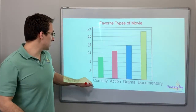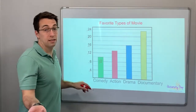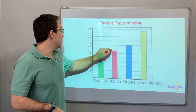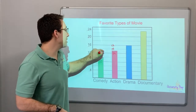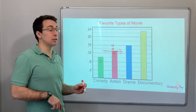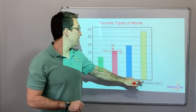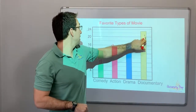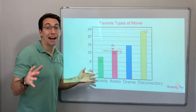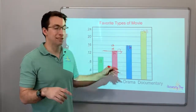Comedy looks like 4, 6, 8, 10 — ten people voted for comedy. Action: 4, 8, 12... so this is 12, 14, 16 — what's right between 12 and 14? 13. That would trick a lot of people on a state test. Documentaries: 20, 22, 24 — so this is 23. It's tricky, be careful. Drama: 16 people liked dramas.